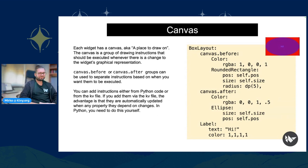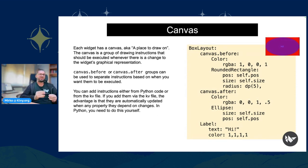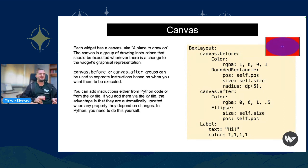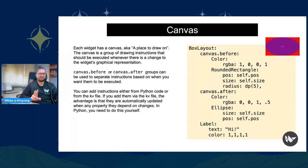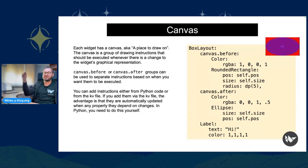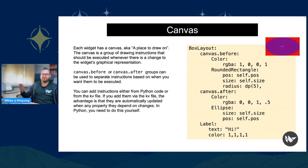Each widget has a canvas — basically an interface to the GPU. The canvas is a group of drawing instructions that should be executed whenever there's a change to the widget's graphical representation. Canvas.before and canvas.after groups can be used to separate instructions based on when you want them executed. You can add instructions from Python code or from the Kivy file; if from the Kivy file, they are automatically updated when any property they depend on changes. In the example, we have a BoxLayout where on the canvas.before group we create a red Rectangle, then place a white Label saying 'Hi', then place a blue Ellipse at half alpha using the canvas.after group.